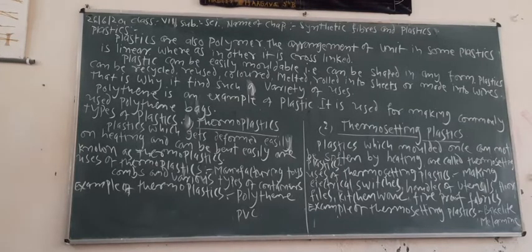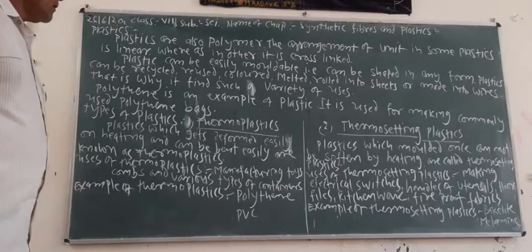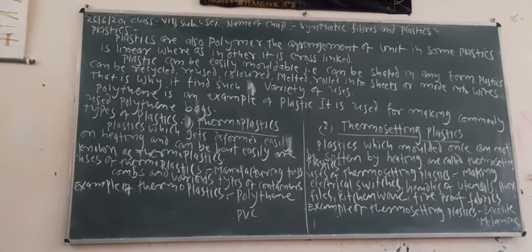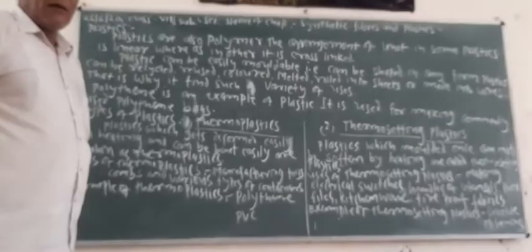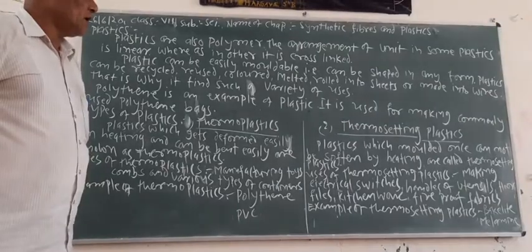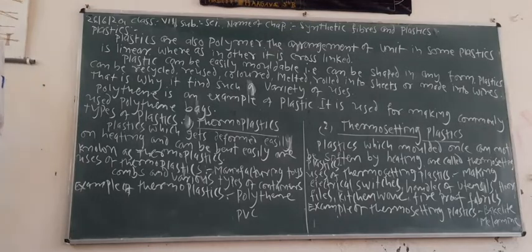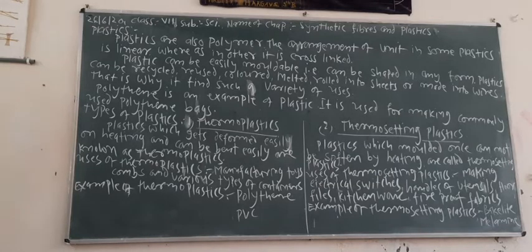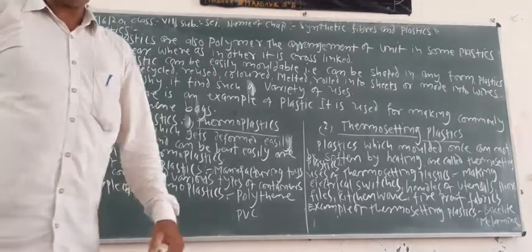Various types of colours can be made in plastic. It can be melted and set in another mould, rolled into sheets, or made into wire. That is why we find such a variety of uses for plastic.